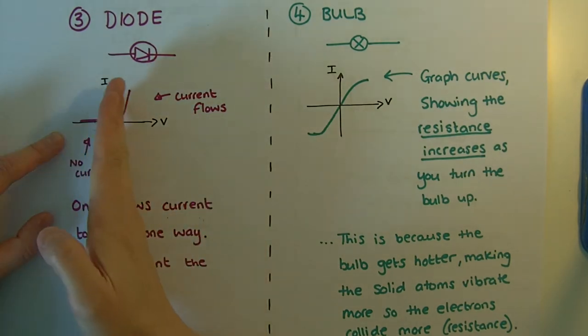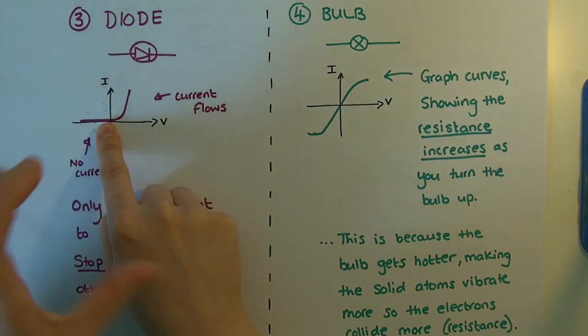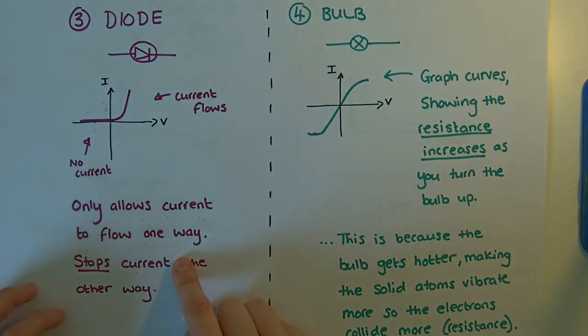We can see in one direction when the voltage is negative, we've got no current flowing. If we were to turn it around the other way, then current would flow. So our diode only allows current to flow one way. It stops the current the other way.